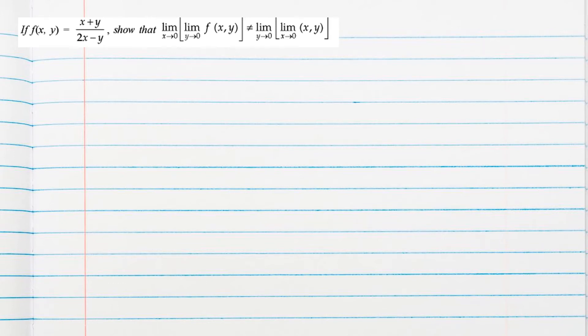f(x,y) is given as (x+y)/(2x-y). We have to show that these two limit expressions are not equal.